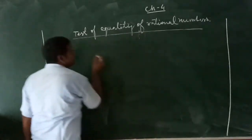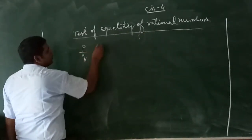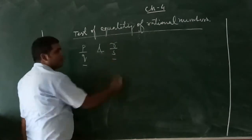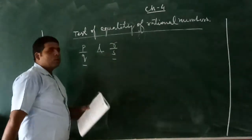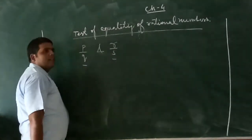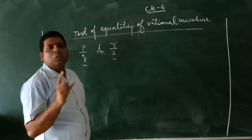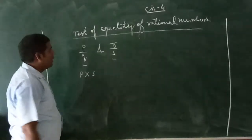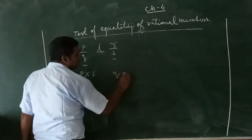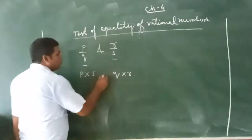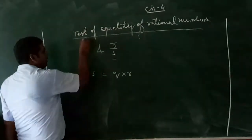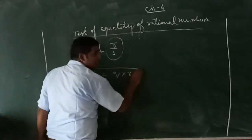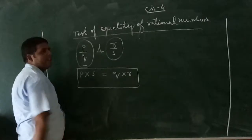If we take two rational numbers as P by Q and R by S, we are going to test the equality of rational numbers. How can we say both rational numbers are equal? If we multiply P by S and Q by R and both are equal, then we can say the given two rational numbers P by Q and R by S are equal. This is the condition for equality of rational numbers.